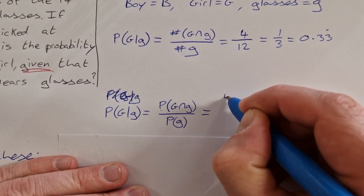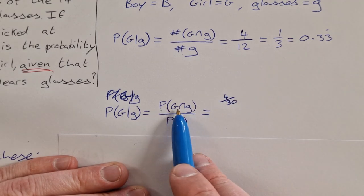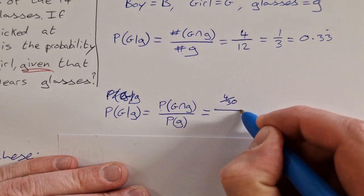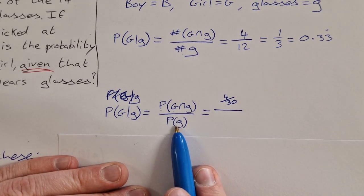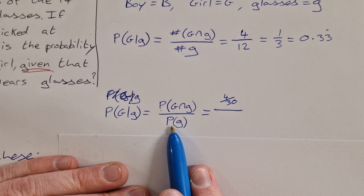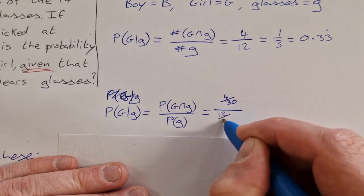So there are 4 girls who wear glasses, there's 30 in the group all together, so the probability of G intersection g is 4 over 30. Over the probability of glasses, so how many students wear glasses in total, that's 12. 12 students wear glasses out of 30.